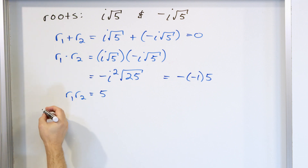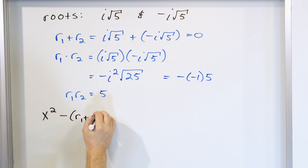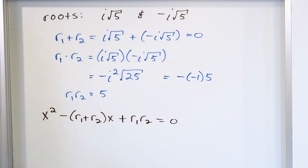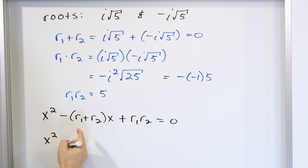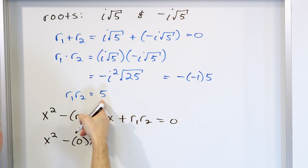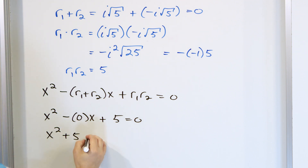To figure out what this quadratic is, follow the theorem: x squared minus (r1 plus r2) times x plus r1·r2 equals zero. We just plug in what we found. The sum of the roots ended up being zero, so we put zero·x, and the product ended up being five. So x squared plus five — because the minus zero goes away — equals zero.